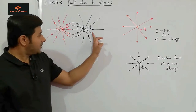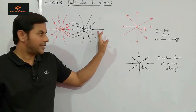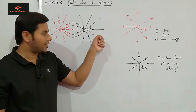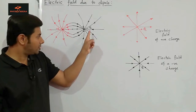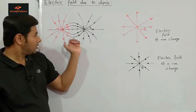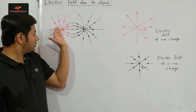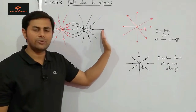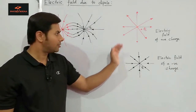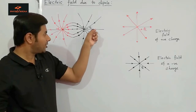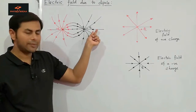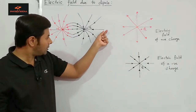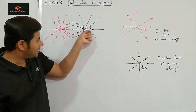On the contrary, closer to the negative charge on this side, the force due to attraction will dominate due to this negative charge, as compared to the force due to the positive charge which will repel the positive test charge. So because the electric field of the negative charge -q dominates, the electric field will be directed inwards towards the negative charge.